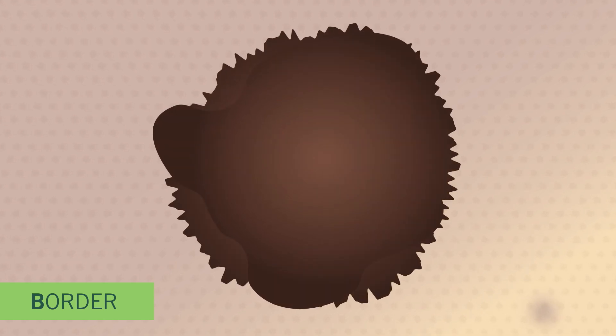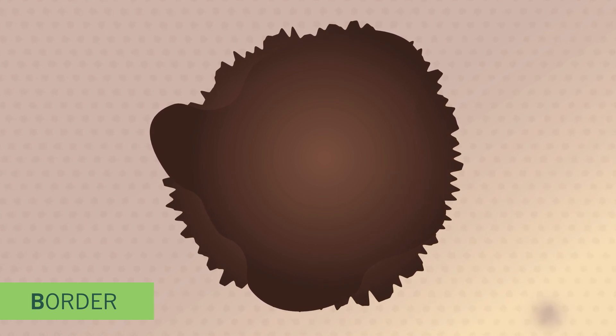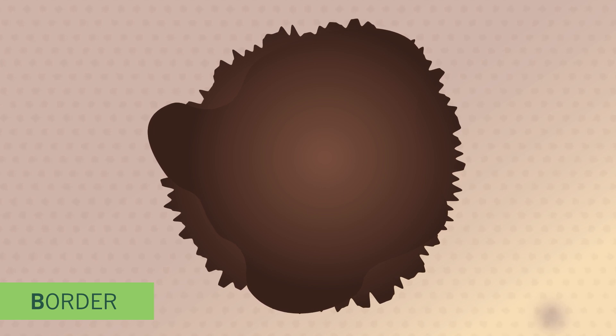B. Border. Normal skin spots have a smooth, consistent border. A mole might look like a perfect circle. An abnormal skin spot might appear jagged or uneven, like a splotch or a splash. They might also have an irregular shape.